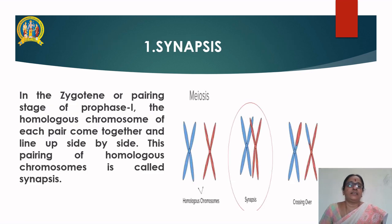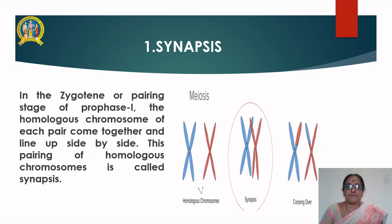Mechanism one: synapsis. In the zygotene or pairing stage of prophase I, the homologous chromosomes of each pair come together and line up side by side. This pairing of homologous chromosomes is called synapsis.